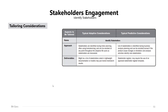Regarding tailoring considerations for the identify stakeholders process: in both life cycles it is known as identify stakeholders. In an adaptive environment, stakeholders are identified during initial planning — often using brainstorming — and can be revisited at any point throughout the adaptive life cycle as new stakeholders are discovered. In a predictive life cycle, the list of stakeholders is identified during business analysis planning and can be revisited or revised if product scope changes or elicitation and analysis activities identify new stakeholders. In an adaptive environment, deliverables may be a lightweight list or brainstorm results.